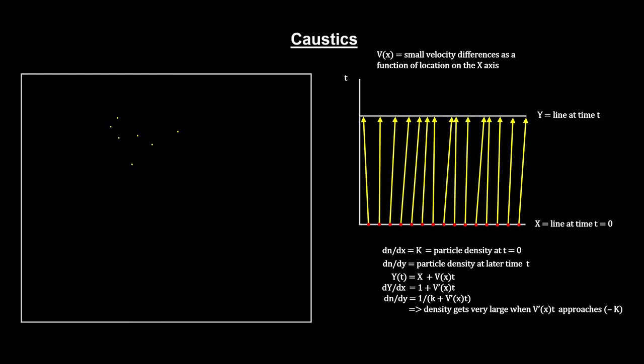The density at a later time t is described by an equation. The equation has hotspots when the denominator approaches zero. Expanding this to two dimensions, we get density peaks along curved lines that themselves intersect at points with maximum intensity.